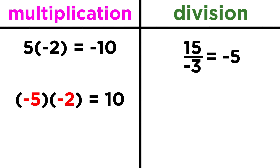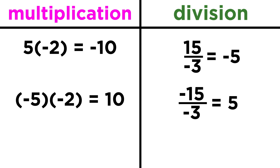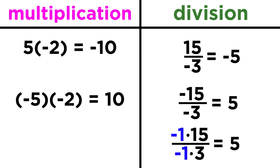However, if both numbers are negative, again the minus signs cancel each other out, and the result will be positive. Negative five times negative two is positive ten. Negative fifteen divided by negative three is positive five. This makes sense if we think of each number as negative one times the positive version of the number. Negative one times fifteen divided by negative one times three is clearly positive five, because the negative ones cancel out, since anything over itself is one.